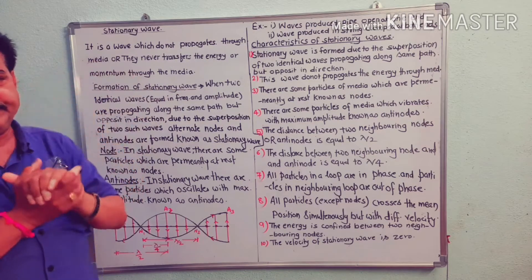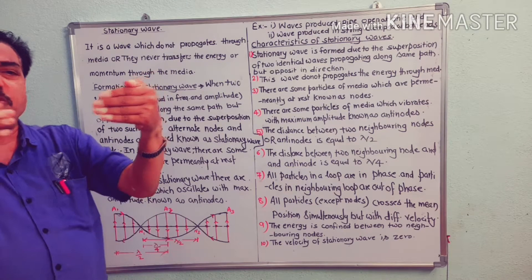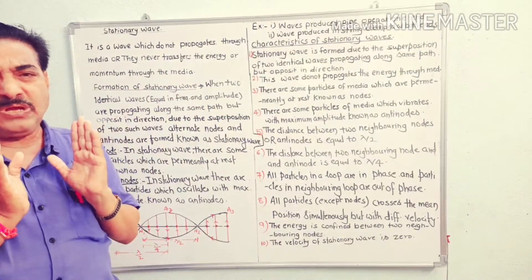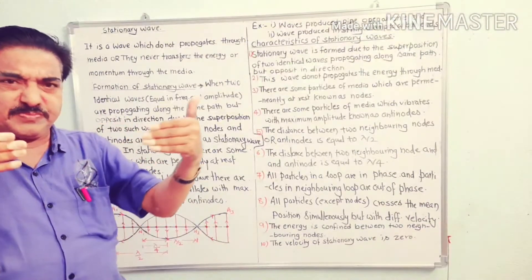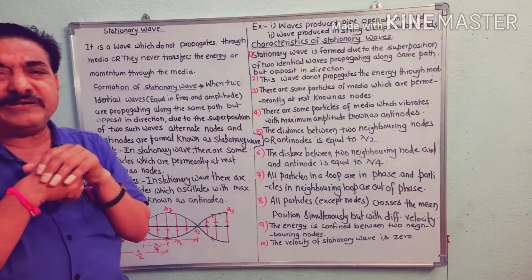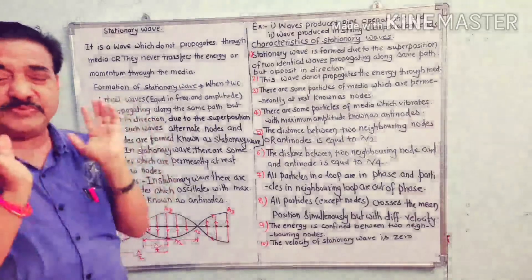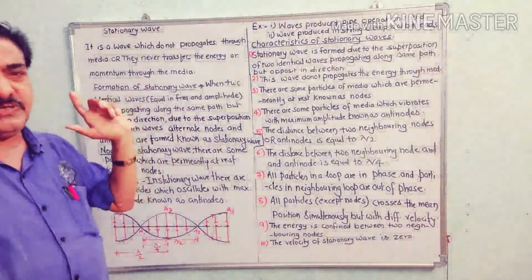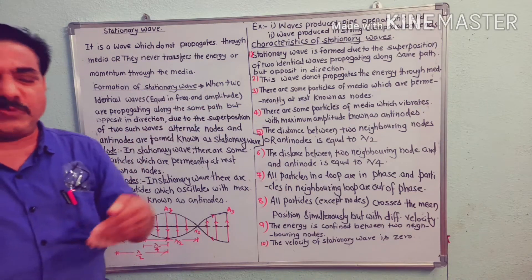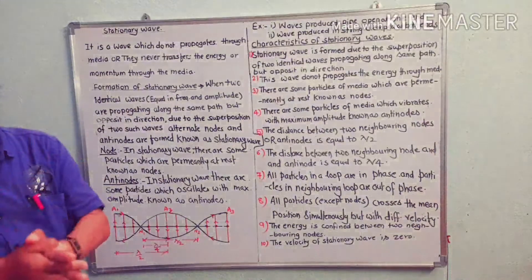Formation of a stationary wave. If two identical progressive waves — that is, two simple harmonic progressive waves equal in frequency and amplitude — are propagating along the same path but opposite in direction, due to the superposition of these two waves, a stationary wave is formed.